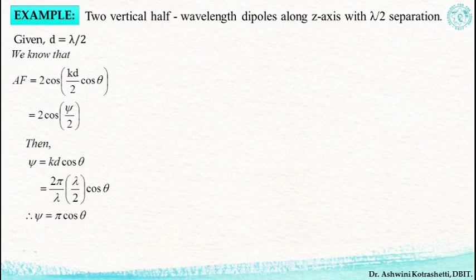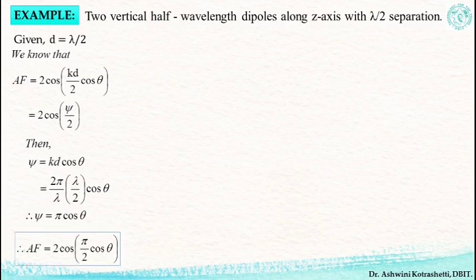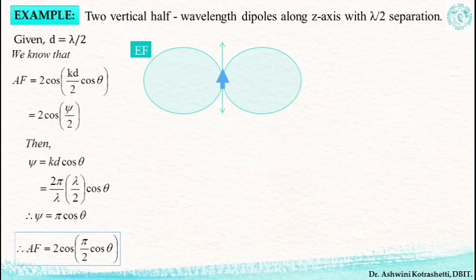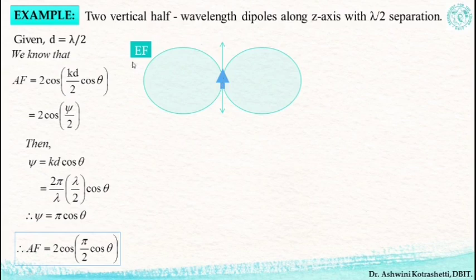Now let's plot the array factor. To solve by pattern multiplication, we know that it is the product of the array factor and the individual element pattern, also called the element factor. We know it's a Hertzian dipole placed vertically along the z-axis, and in the E-plane it has a figure-of-8 pattern. So the individual Hertzian dipole placed at the origin has the radiation pattern you see on the screen. Now let's take the plot for the array factor by plotting it for different values of theta. We have plotted this array factor before in one of the examples — 2 cos(pi/2 cos(theta)) with separation lambda by 2.